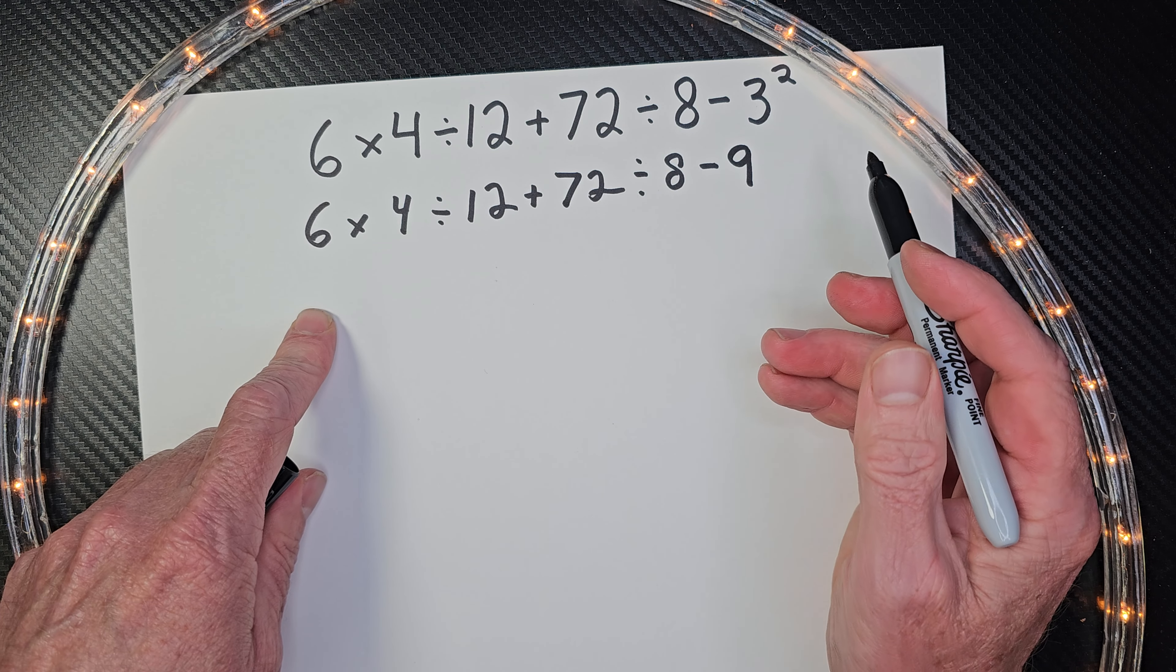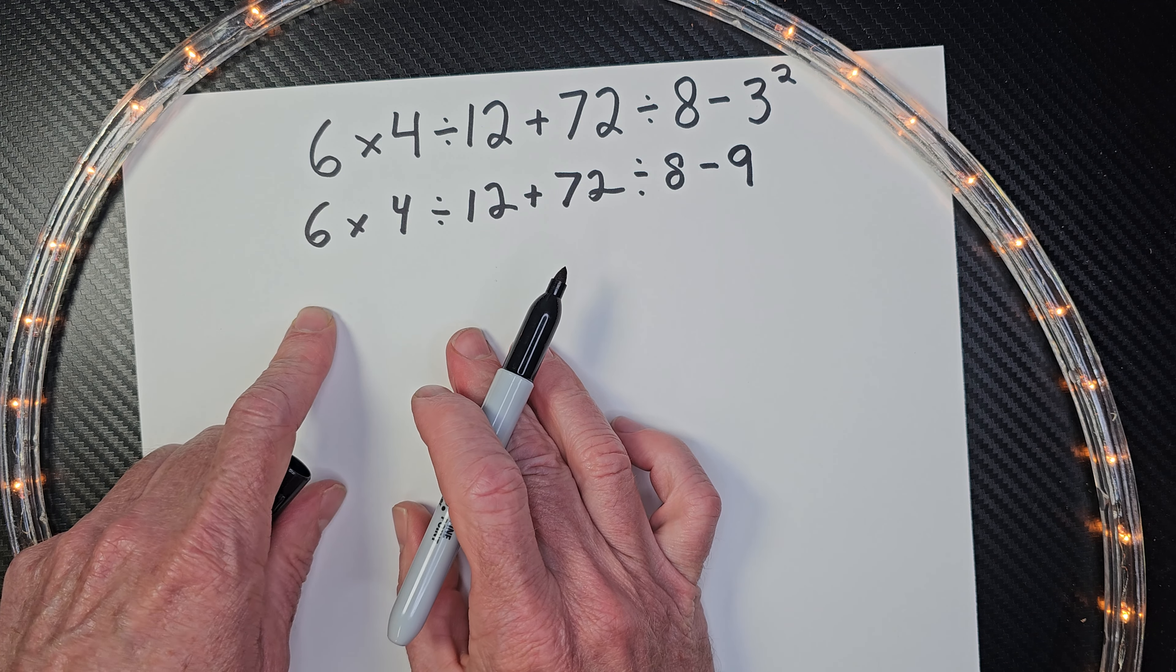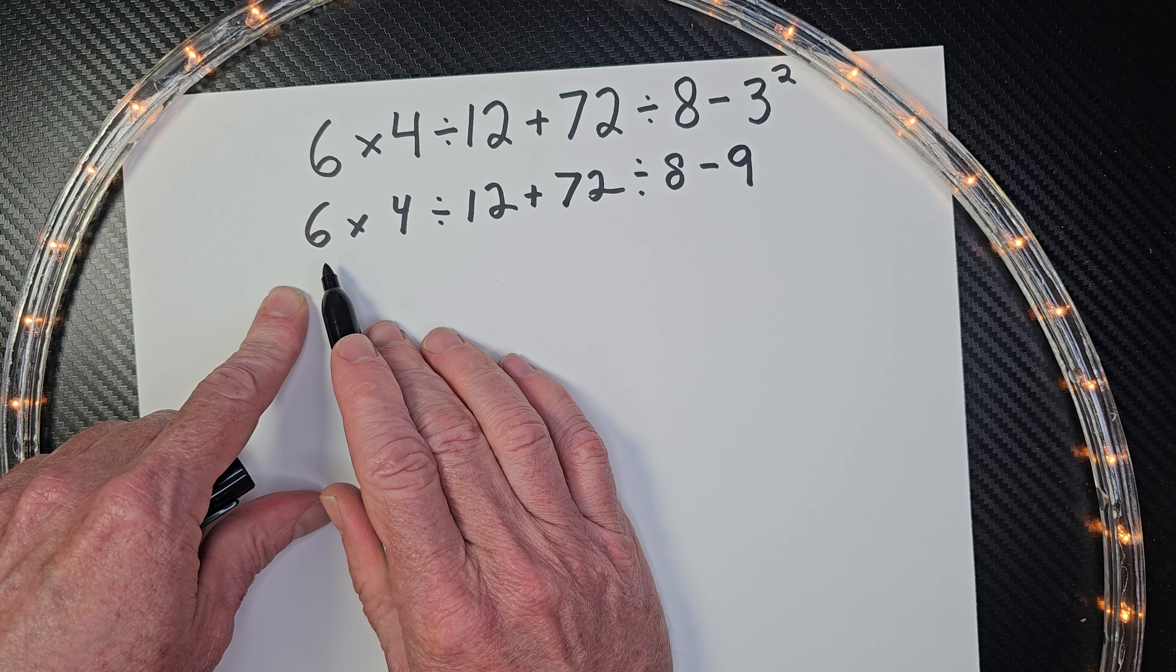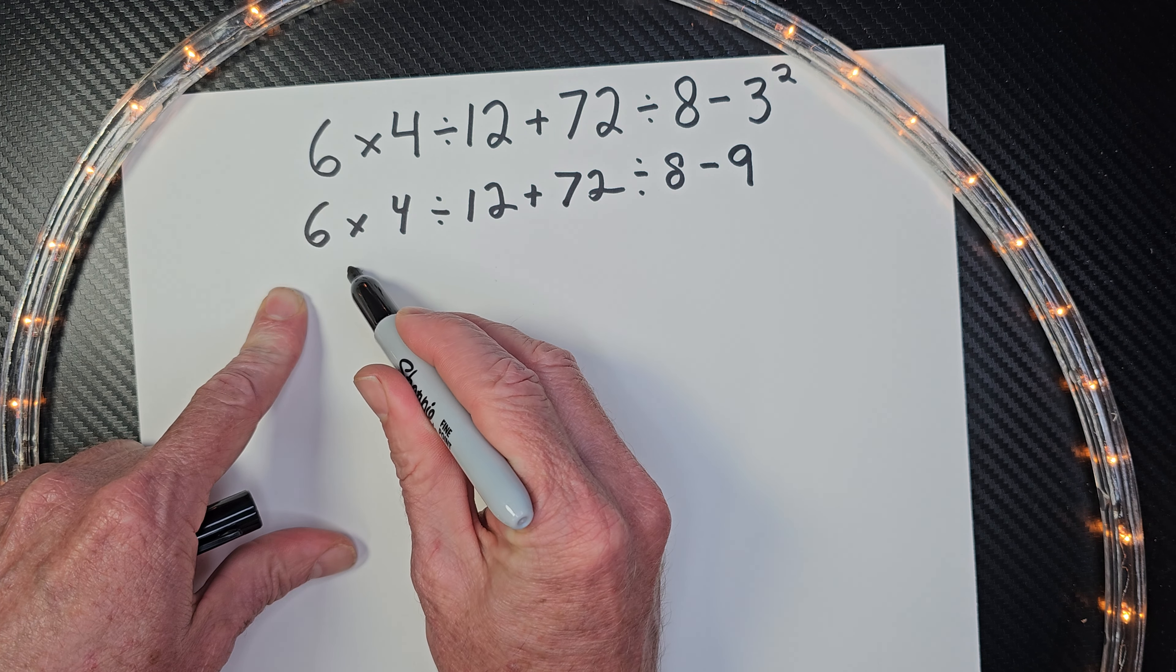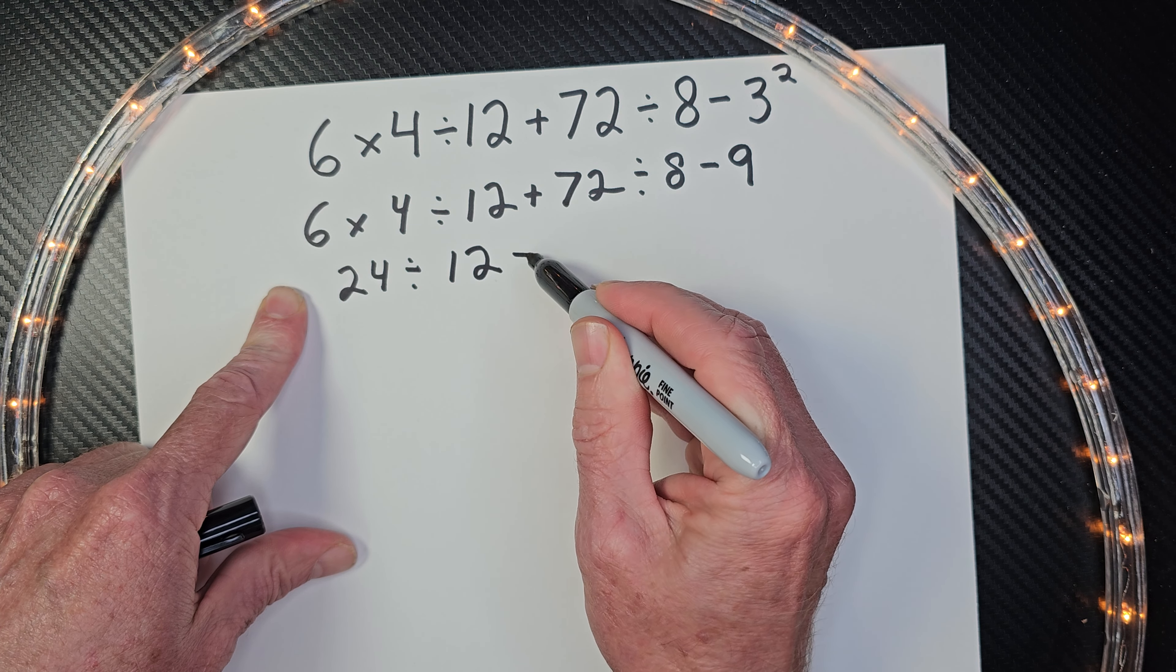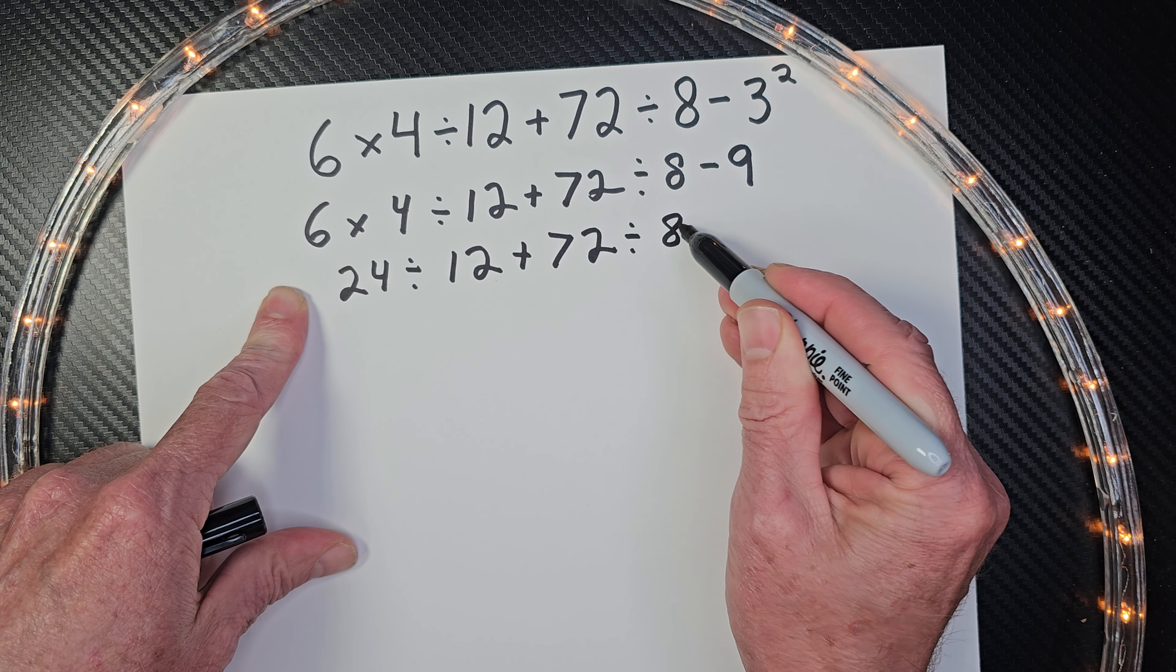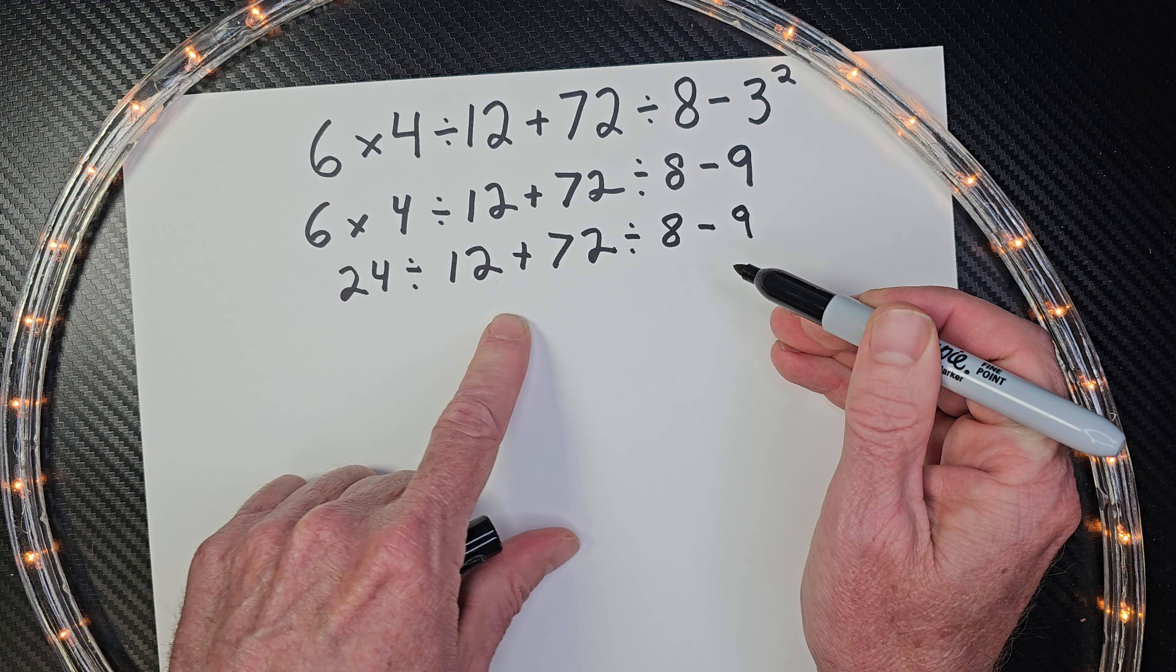Now, there are different ways to come up with the same answer. I'm just doing it this way, but like mathematics, there's so many ways to achieve the same answer. So it's like a puzzle. Alright, now I'm going to go ahead and do multiplication and division from left to right. So I'm going to start right here. 6 times 4 is 24 divided by 12 plus 72 divided by 8 minus 9.